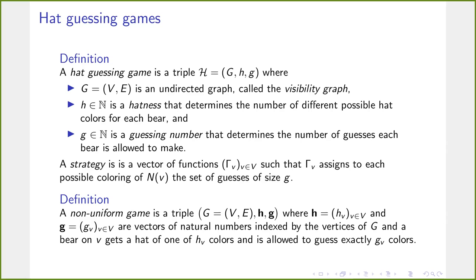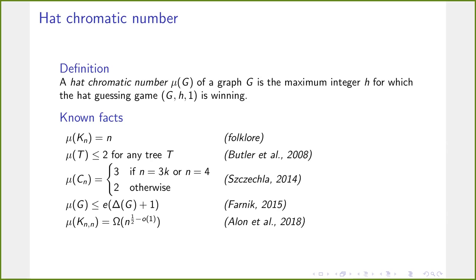The classical parameter associated with the single-guess hat guessing game is the hat chromatic number. The hat chromatic number μ(G) is simply the largest integer H for which the hat guessing game on G, where each bear receives one of H colors, is winning. Some known facts: the hat chromatic number of a complete graph on N vertices is N — the strategy from the first example generalizes straightforwardly. For trees it is at most two. For cycles it is already quite complicated.